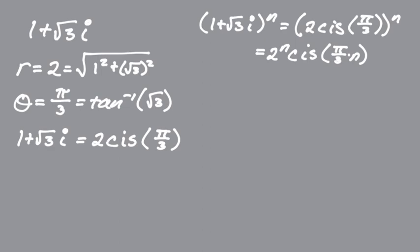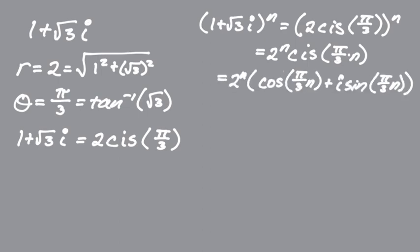Cis stands for cosine θ + i sine θ. So expanding this, we get 2^n (cos(nπ/3) + i sin(nπ/3)). Our goal is to get a real number, which means the imaginary part needs to go away — this part needs to be zero.